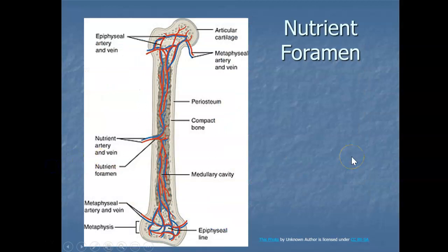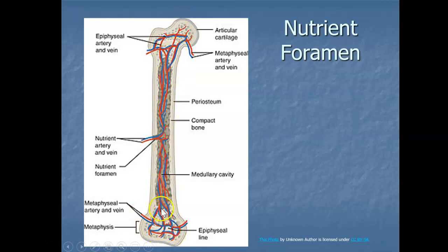The last structure is the nutrient foramen. Spongy bone and the medullary cavity receive nourishment from arteries that pass through the compact bone via a small opening in the diaphysis called the nutrient foramen. The arteries bring nutrients first to the compact bone, then down to the spongy bone, while veins collect the waste and carry it out. Those are the structures, cells, and tissues of bones.